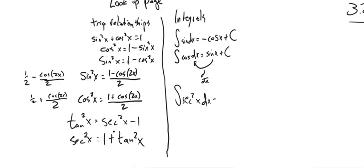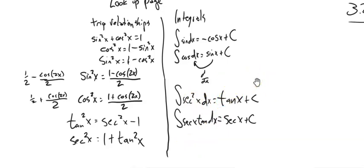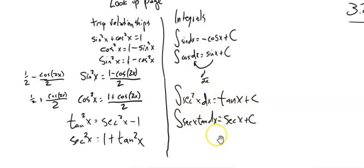Let's get some key integrals up here. The derivative of tangent is sec²x, so the integral of sec²x is tangent. The derivative of secant is sec x · tan x, so the integral of sec x · tan x is secant. For u-substitution: if u = tan x, then du = sec²x dx; if u = sec x, then du = sec x · tan x dx.